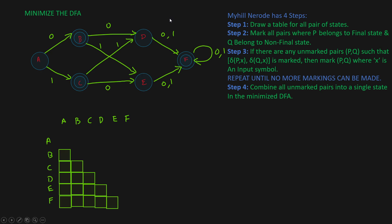Myhill-Nerode theorem has 4 steps. The first step is you draw a table for all pairs of states. So let's say we have got states like A and B, you draw a table for that — B and E, B and C, A and C. Basically we are making all the pairs, but we are not making pairs of states with the same state. Also, if we have already marked it for A and B, we don't need to make a table for B and A again. That's why we have only got this half area over here.